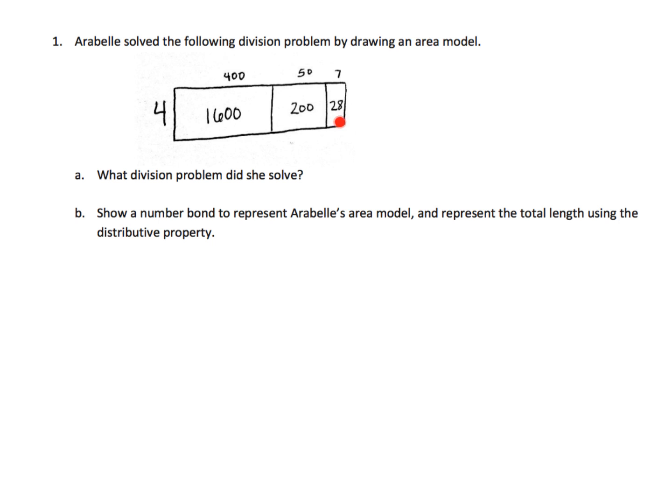So what we're now looking at is the finished work. And we can see that the answer is 457. So the question is, well, what was the division problem? We definitely know it was divided by four because it says so right here. Now, if we want to know what's inside the house, we're just going to add up all of these numbers. So 1,600 plus 200 plus 28 gives us 1,828. And we know that our answer is 457.